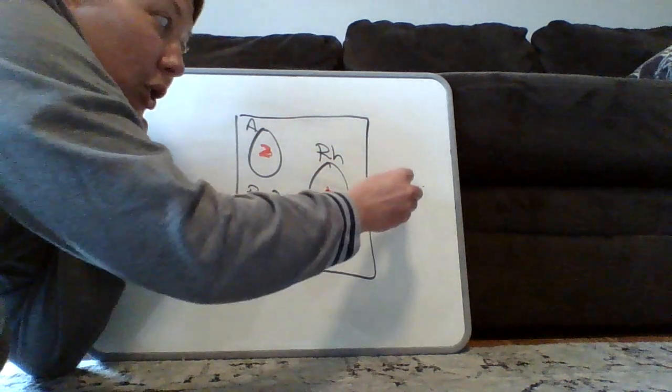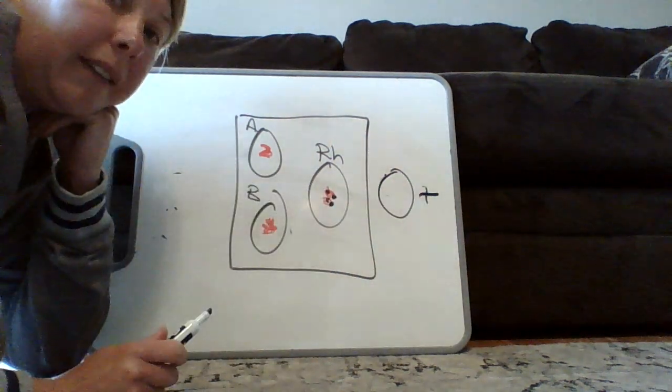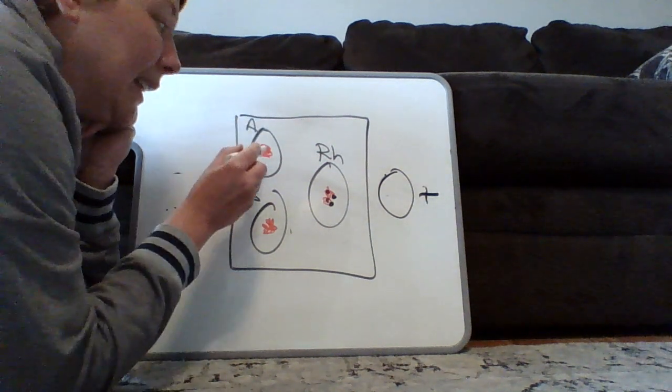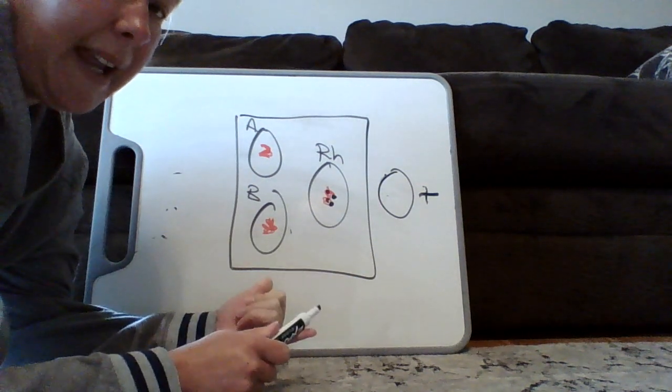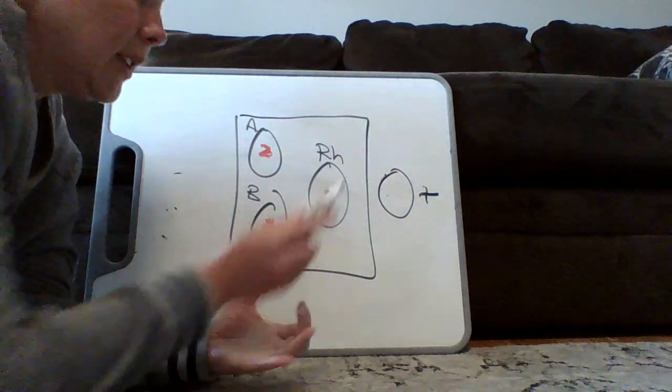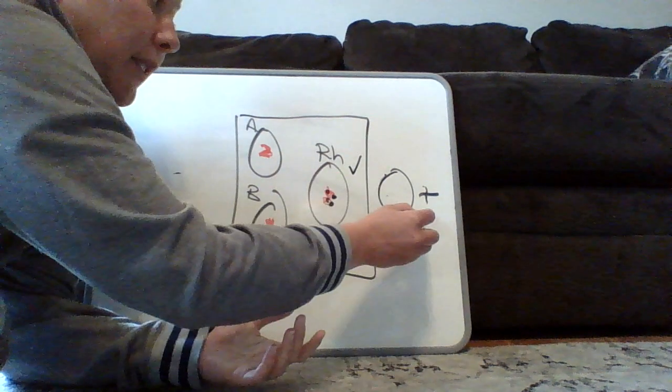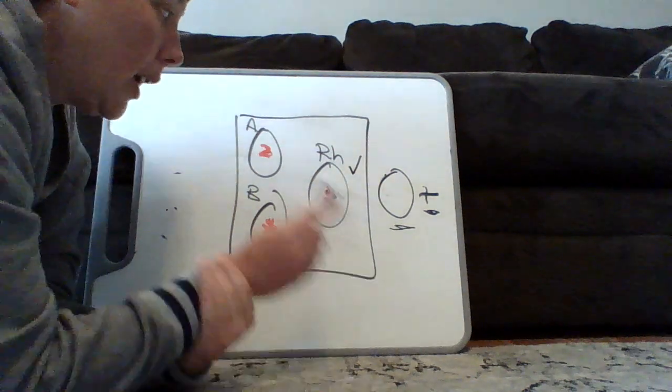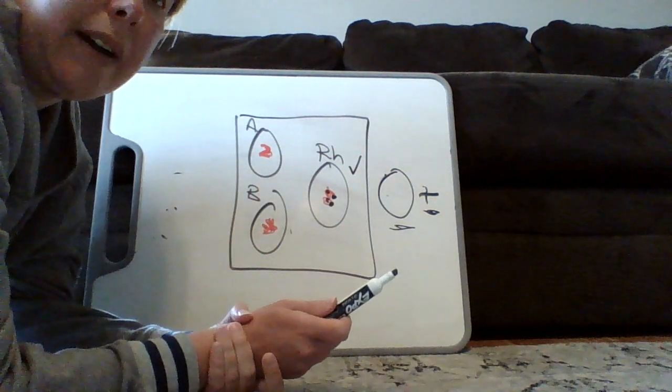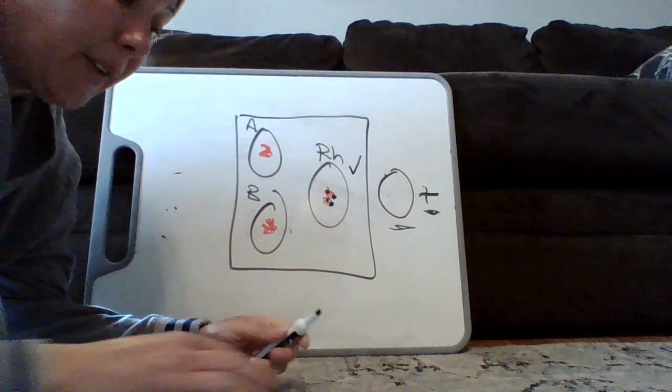You should have come up with the answer of O positive. We didn't find A antigens. We did not find B antigens. So they don't have the A antigen or the B antigen. We did find RH, right? So that's what gives it the positive because we have no A or no B, you would have O blood.